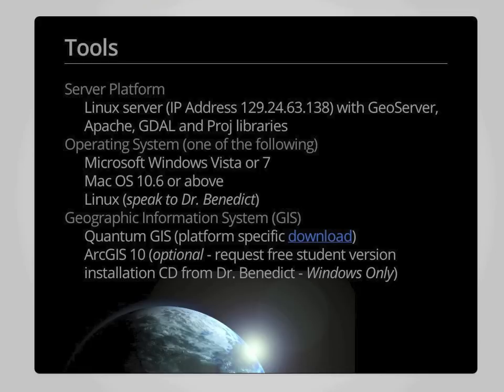One key tool shared among all class participants will be a server platform physically located within the geography department at UNM. It runs the Linux operating system with a number of key applications including the geospatial portal platform, the Apache web server, the Geospatial Data Abstraction Library (GDAL) and the associated OGR library for handling vector data, and the PROJ4 library used for coordinate transformation functions.